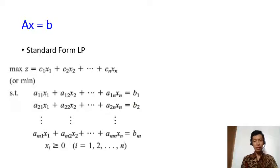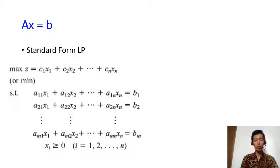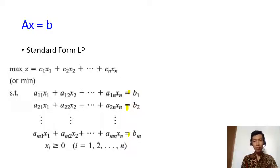We have a standard form LP. In the objective function we have c1 times x1, c2 times x2, up to cn times xn, so we have n variables. Then we have the constraints, and all constraints have equality signs, with right-hand side values b1, b2, up to bm, so we have m constraints.